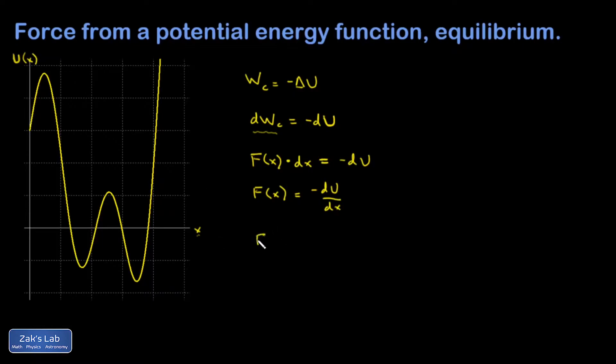Quick example: a potential energy function we know well is spring potential energy, U = 1/2 kx². If I differentiate that with respect to x, I get a two coming down and canceling the one-half, giving me kx, but with a minus sign in front. You'll recognize that as Hooke's law, F = -kx, with the sign indicating direction - if x is positive, the force is negative, trying to restore the spring back to x = 0.